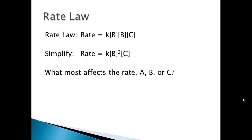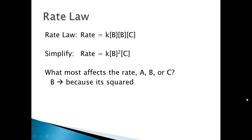Now let's make some predictions. Of the three reactants in the overall reaction — A, B, and C — which affects the rate the most? A doesn't affect it at all because it's not in the rate law equation. Between B and C, B is squared, so it will affect the rate the most. Whatever you change the concentration of B by, that change will also be squared, giving it the biggest effect on the rate.